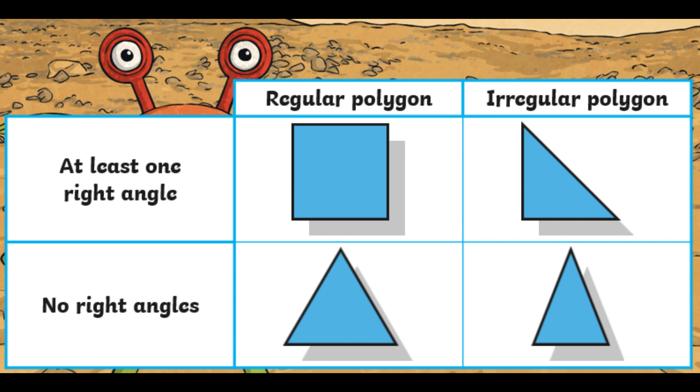So the square is regular and it has at least one right angle. In fact, it actually has four right angles. And then on the right, at the top, you've got the right-angled triangle. It is a polygon because it's all straight sides. However, one side is different in length from the other two, as are some of the angles.